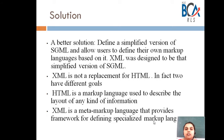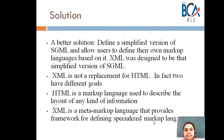What we can do is define a simplified version of SGML and allow users to define their own markup languages based on it. XML was designed to be that simplified version. XML is not going to replace HTML — both XML and HTML have different goals. HTML is a markup language made of tags used to describe the layout of information, while XML is a meta markup language that provides a framework for defining specialized markup languages.